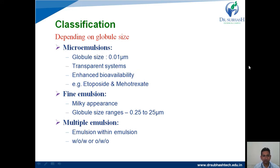Depending on the globule size, there are three types. The first is microemulsion — the globule size is 0.01 micrometers, and the system appears transparent because the globule size is very small. Due to the small globule size, the bioavailability is also increased compared to regular emulsion.